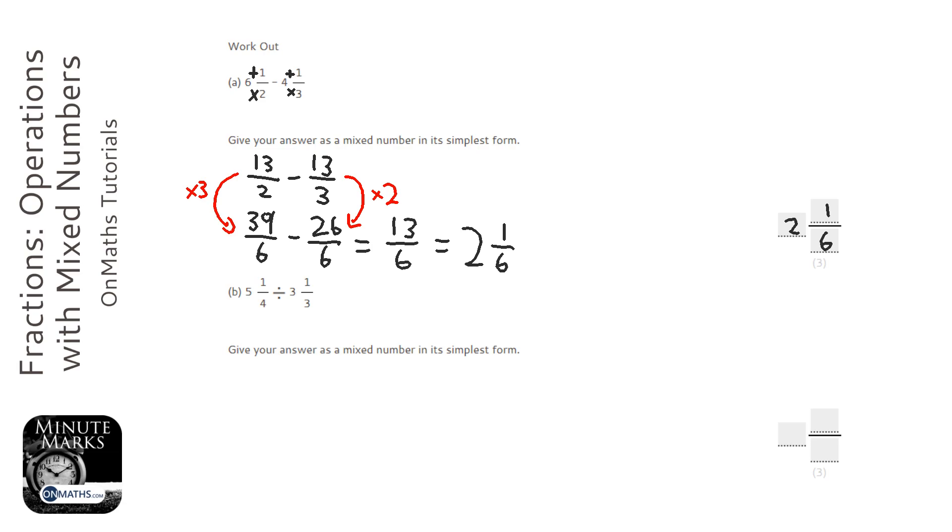The second question, we need to convert these into top-heavy fractions or improper fractions, like we did before. So five times the four is twenty, add to the top twenty-one over four. And three times three is nine, add to the top is ten. Keep the bottom the same.